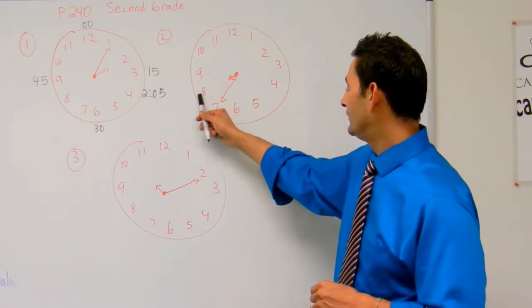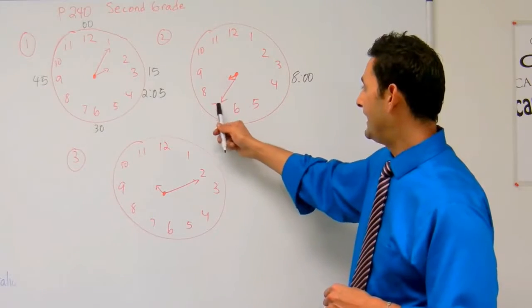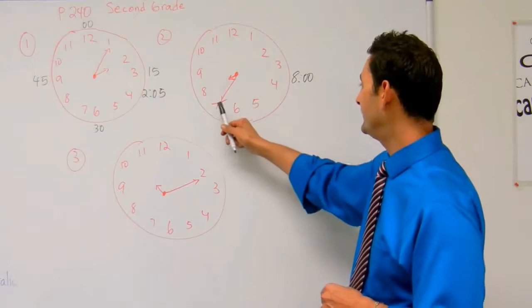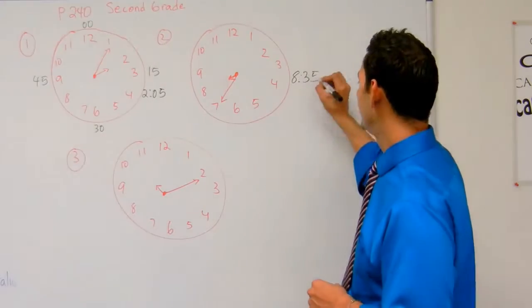Now let's take a look at number two. The small hand is pointing close to the eight, so that's going to be eight, and then the minute hand is pointing to the seven, so let's count by fives. Five, 10, 15, 20, 25, 30, 35, so that's going to be 8:35.